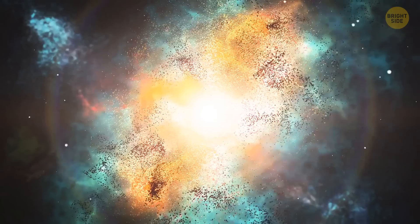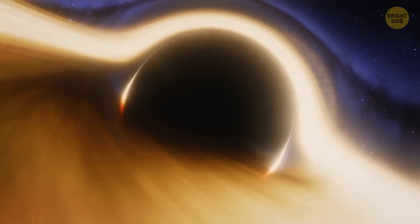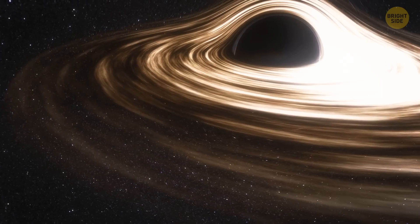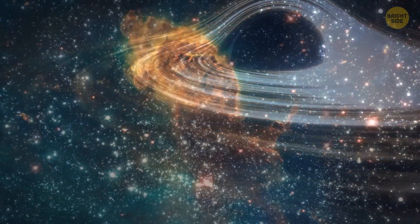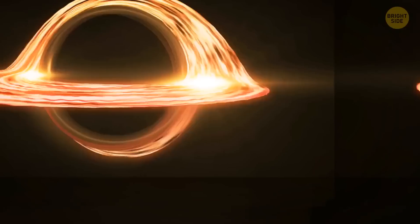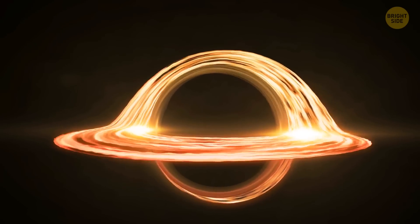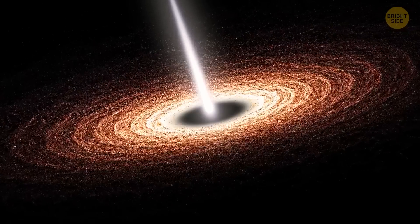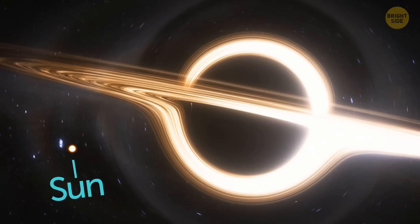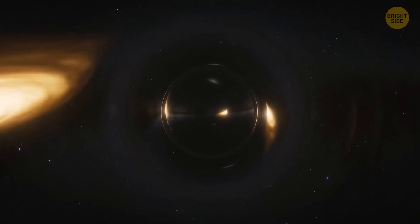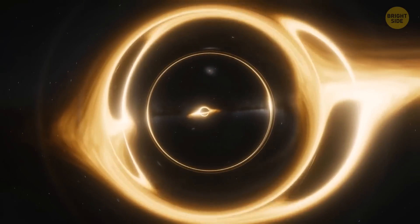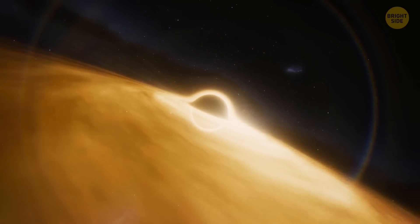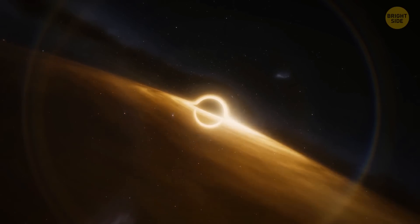Hubble found that most galaxies with a central bulge of stars likely have supermassive black holes. It also noticed a strong connection between the size of these black holes and their host galaxies, which might help us understand how the universe has changed over time. A supermassive black hole is a very large black hole that is typically found at the center of a galaxy. It is millions or even billions of times more massive than our sun. These black holes are so powerful that they can swallow stars and even entire galaxies. Scientists are still exploring these mysterious objects, but they believe that they play a crucial role in the formation and evolution of galaxies.